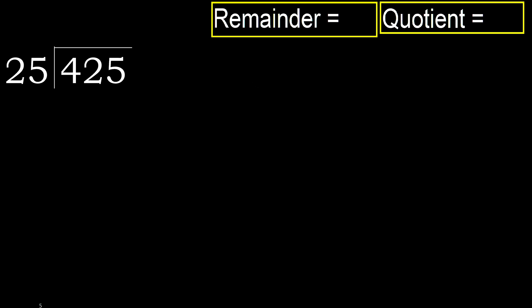425 divided by 25. 4 is less, therefore next. 42 is not less, therefore we work with 42. 25 multiplied by which number is nearest to 42, but not greater?